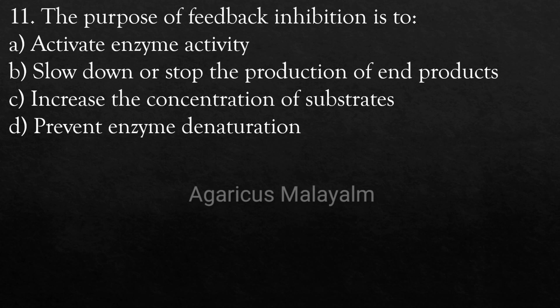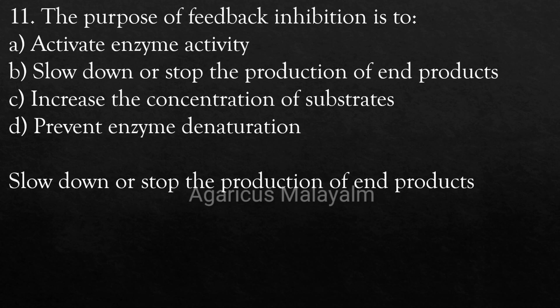Eleventh Question: The purpose of feedback inhibition is to? Option A: Activate enzyme activity. Option B: Slow down or stop the production of the end product. Option C: Increase the concentration of substrates. Option D: Prevent enzyme denaturation. Correct Answer: Option B — Slow down or stop the production of the end product.